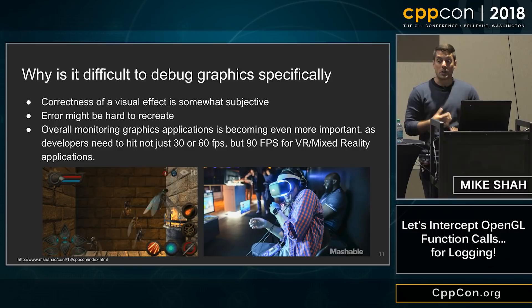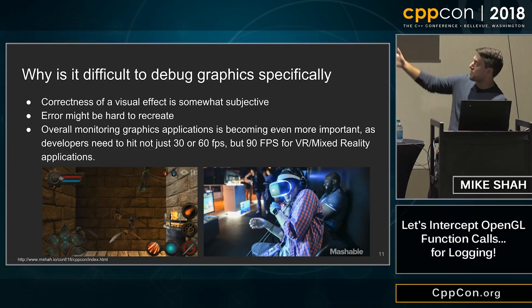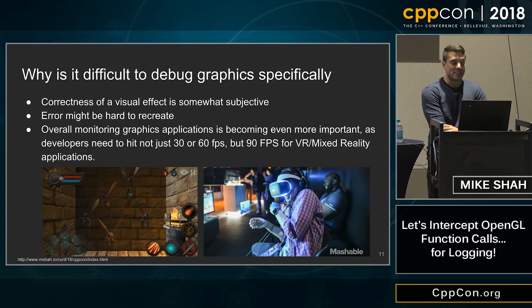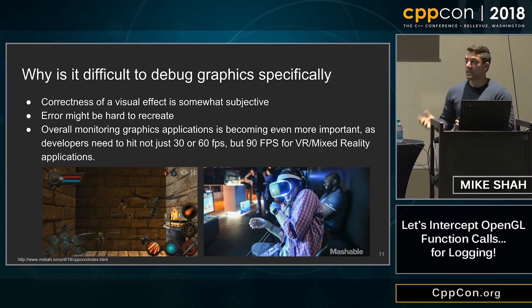Why is OpenGL important to debug, or hard to debug? Well, correctness of a visual artifact is sort of subjective — what looks good versus what's right or wrong. Even looking at some bugs, it's hard to tell if they should be there or not. And in especially very interactive environments, it's hard to recreate what caused some visual defect. That's where a logger recording some information can be really helpful.